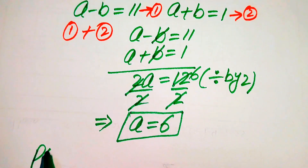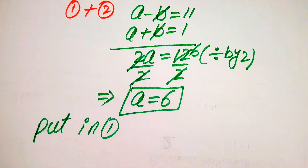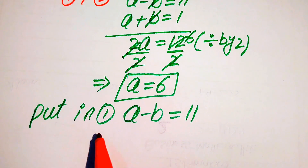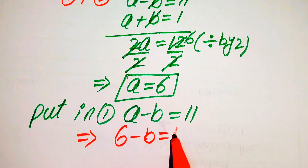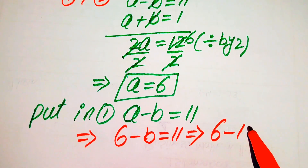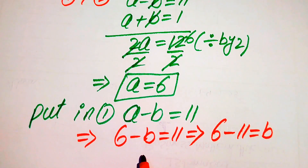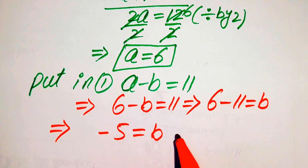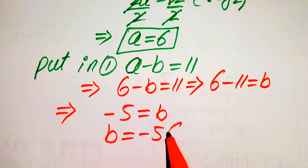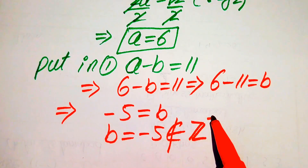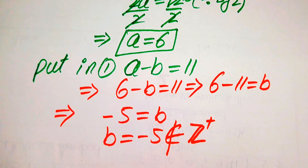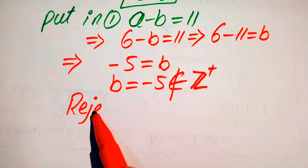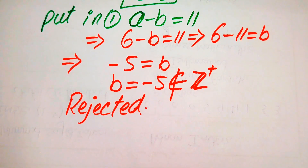For the value of b, we substitute a = 6 into equation 1: a minus b equals 11. This gives 6 minus b equals 11, so b equals 6 minus 11, which is minus 5. Since minus 5 does not belong to the positive integers, we reject this case as it does not satisfy our given question statement.